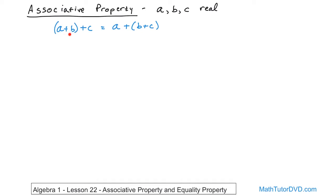When the parentheses are on the left, you have to add A and B together first, and then add C. On the right-hand side, you must add B and C together first, and then add A. The only thing different between the two sides is which pair you add first, and what the associative property tells us is that in both cases you get the exact same answer — that's why there's an equal sign.